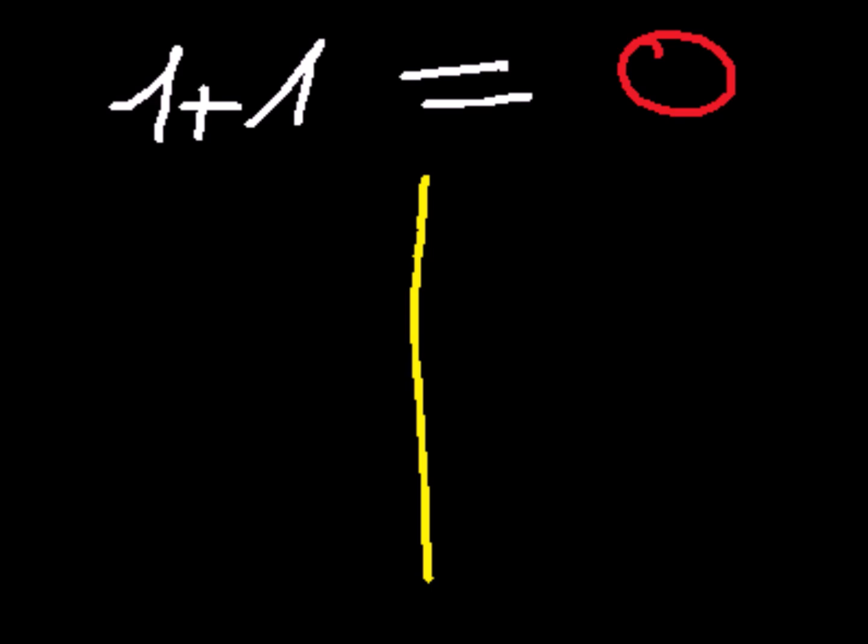You can choose whichever side at random, like maybe you could Google flip a coin. If it's heads, then hide the left side, and if it's tails, hide the right side.